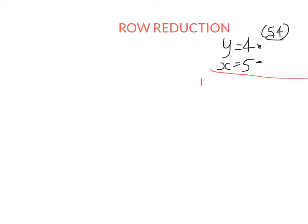The first thing I can do is I can switch the order of these equations. If I write it as x equals 5 first and y equals 4, I haven't changed anything — the solution is still (5, 4). That probably seems very trivial to you, like of course that's true, but it's important I go through these to show you why we do row reduction.